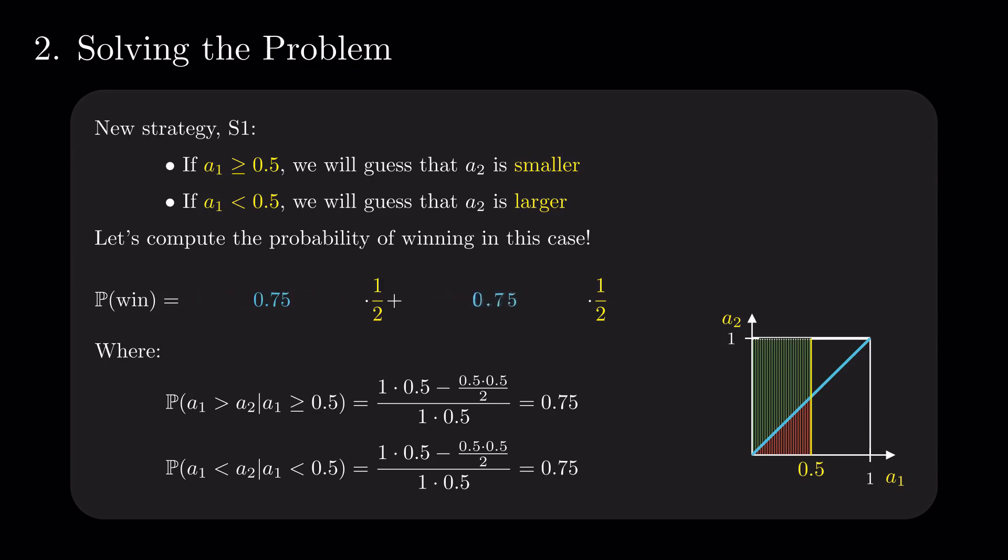Plug the values in and the probability of winning is 75%. We obtain incredible improvements over mere chance. The strategy proposed is facile and yet, it creates excellent results. It also opens the idea that there might be a better strategy, more complex perhaps, with even higher odds.